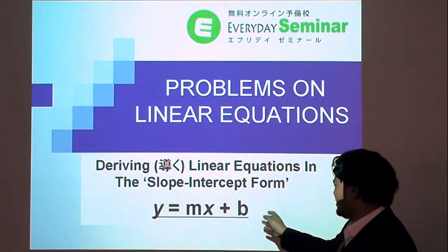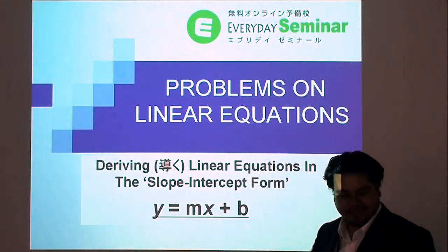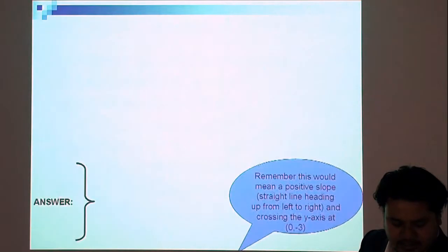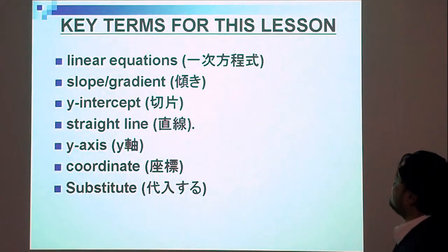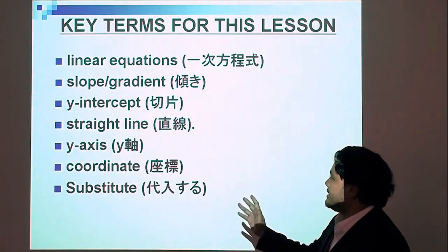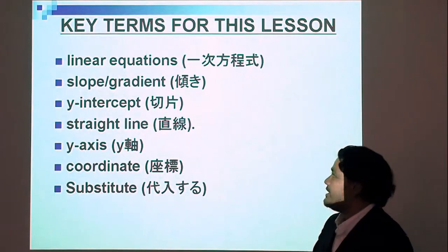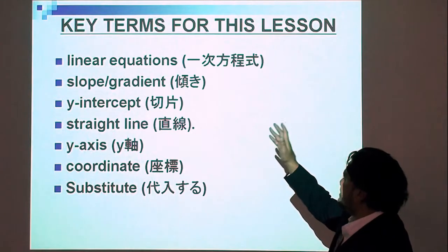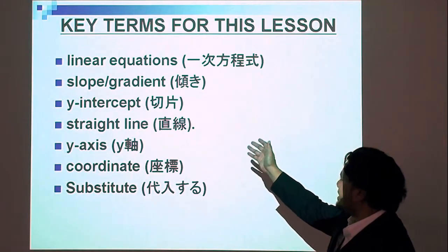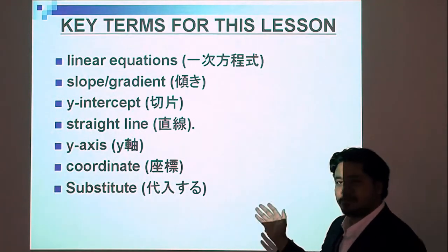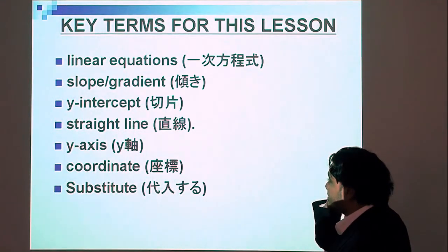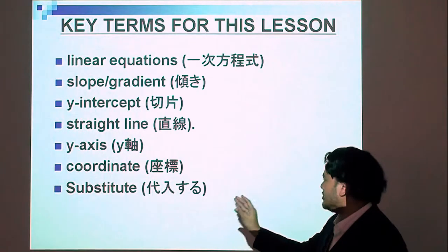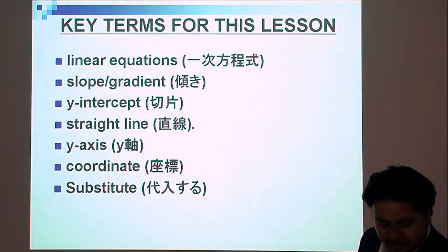y equals mx plus b — don't forget that. Key terms for this lesson: a lot of it is pretty much the same as the first lesson we had on linear equations. We'll be covering terms such as slope and gradient, the y-intercept, straight lines, y-axis, coordinates, and substitute — to substitute a value, as we'll see later on.